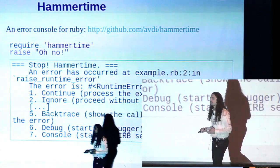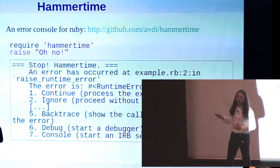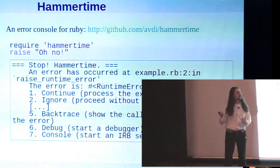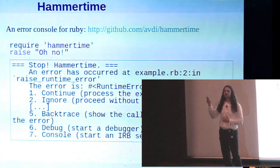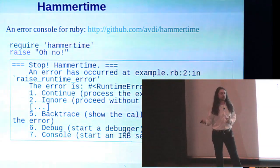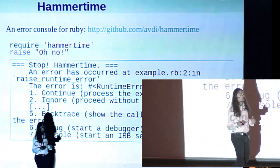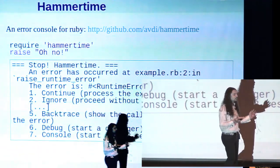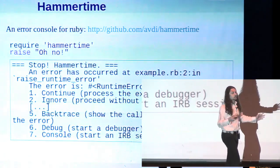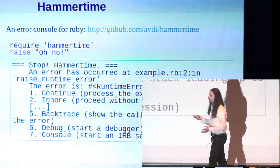For a potentially more interesting use of this fact, you might want to take a look at my Hammer Time gem. Hammer Time is an attempt to add a Lisp or Smalltalk style error console to Ruby. So at the point where the exception is raised, it will give you the option to ignore the exception, to continue raising the exception, to drop into a debugger at the point where the exception was raised, drop into a console, a bunch of other stuff.